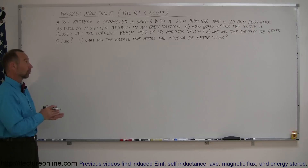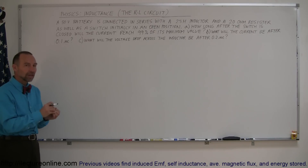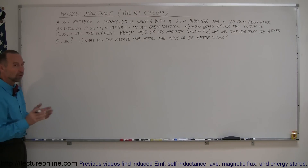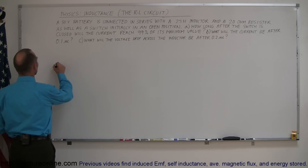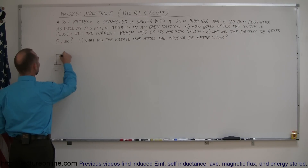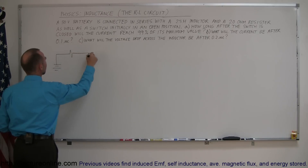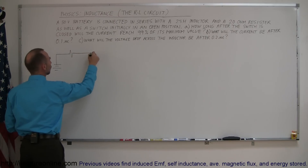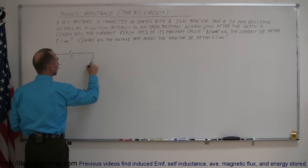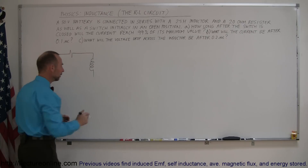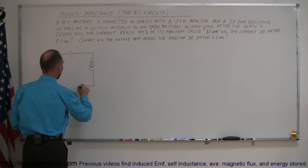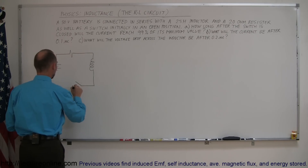An RL circuit is a circuit that has a resistor and an inductor in it. So let's draw an inductor circuit like this — we have a battery connected to a resistor, connected to an inductor. The symbol for an inductor looks kind of like a coil.